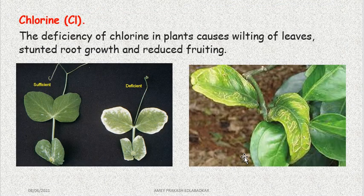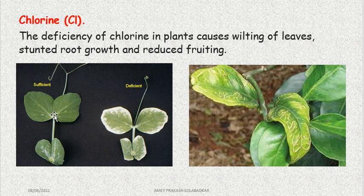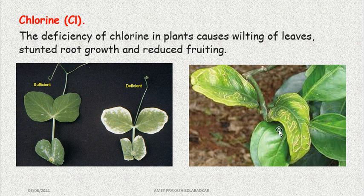Chlorine deficiency in plants causes wilting — turgidity is lost. You can see the leaf shape has completely changed. This is with sufficient chlorine, and this is with deficient chlorine. Infection begins to develop from the margins and yellowing of the leaf occurs.